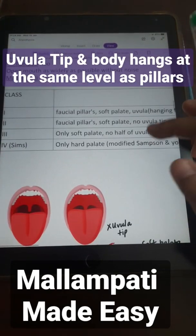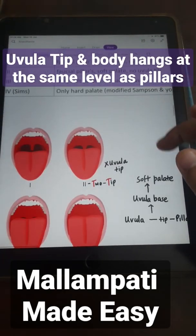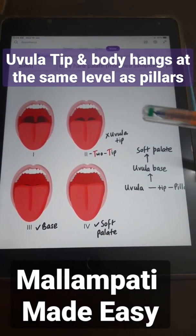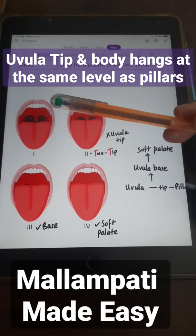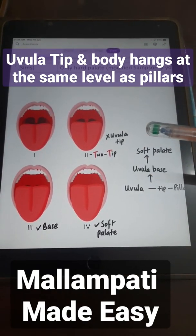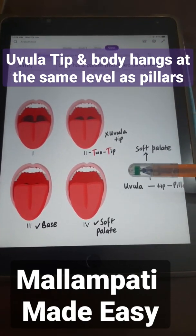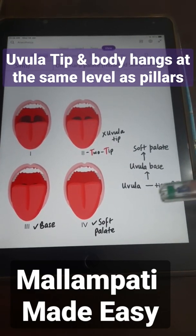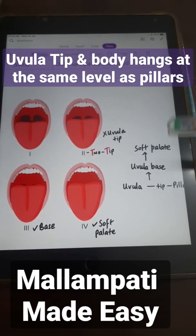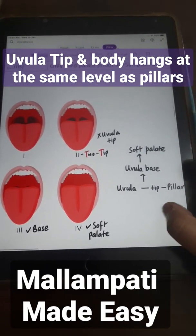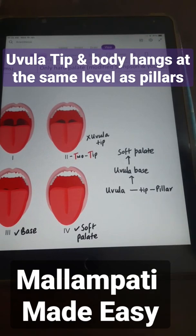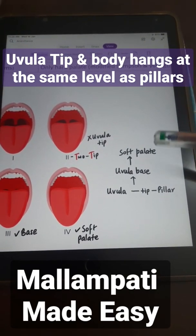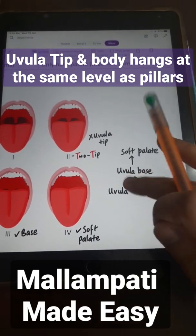Mallampati's table is pretty overwhelming because there's a lot of information, so here are a few pointers and concepts that will help you remember it. The first concept: 1 to 4 is worst prognosis — 1 is the best and 4 is the worst. You have to remember that we go from the floor of the mouth to the top, which is the soft palate. The uvula tip and the pillars stay at the same level, next is the uvula base, and then the soft palate.